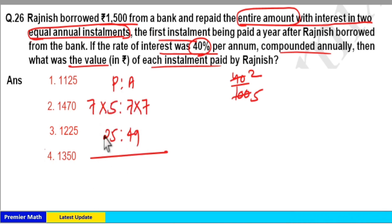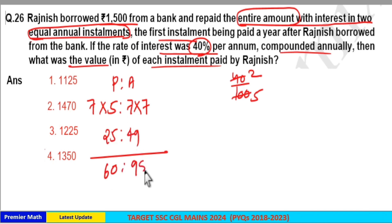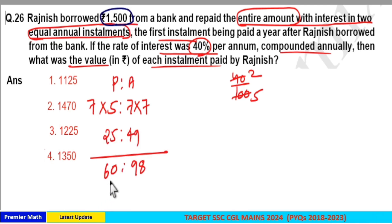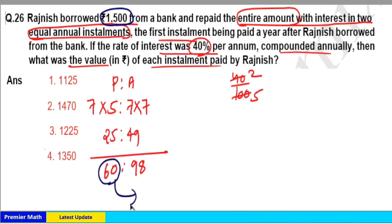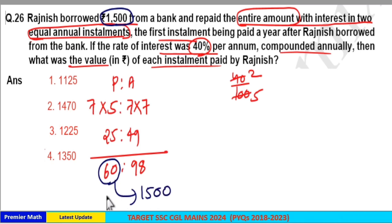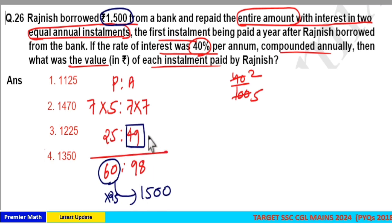Taking the sum of principals: 35 plus 25 is 60 parts, and the total amount is 49 plus 49 which is 98 parts. The question states the principal is 1500, and in the ratio the total principal is 60 parts. So 60 parts equals 1500, meaning each part equals 25. Therefore 49 parts is the instalment amount paid back each year.